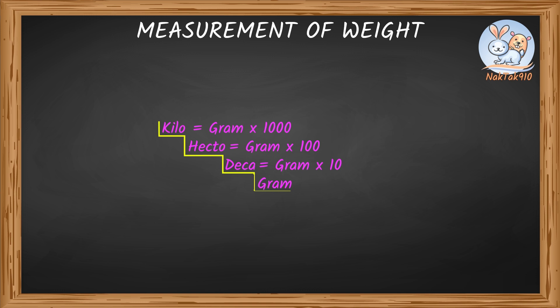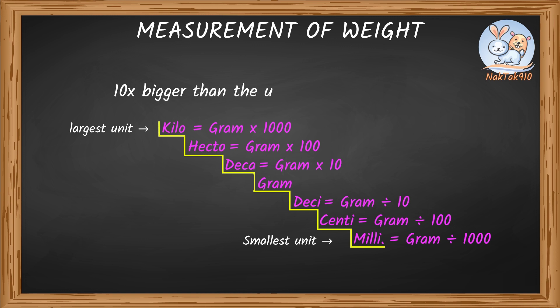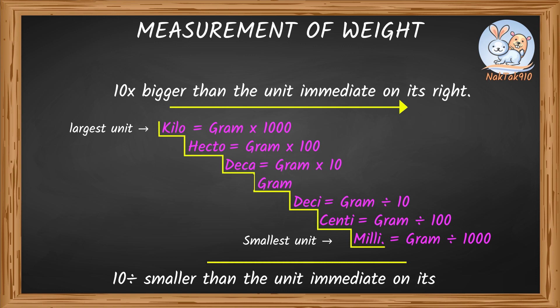Now let's see units that are smaller than a gram. The unit that is 10 times smaller than a gram is a decigram. The unit that is 100 times smaller than a gram is a centigram. The unit that is 1000 times smaller than a gram is a milligram. Each unit is 10 times bigger than the unit immediately on its right, and 10 times smaller than the unit immediately on its left.